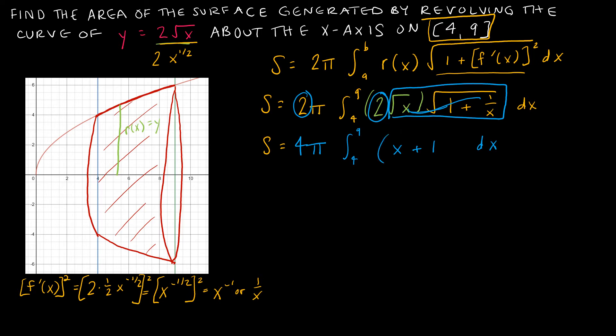I'll write the square root as a 1/2 power to make things easier. The antiderivative of (x+1)^(1/2) is (x+1)^(3/2) divided by 3/2, which is (2/3)(x+1)^(3/2). I don't need the chain rule here because the derivative of (x+1) is just 1. Evaluating from 4 to 9.